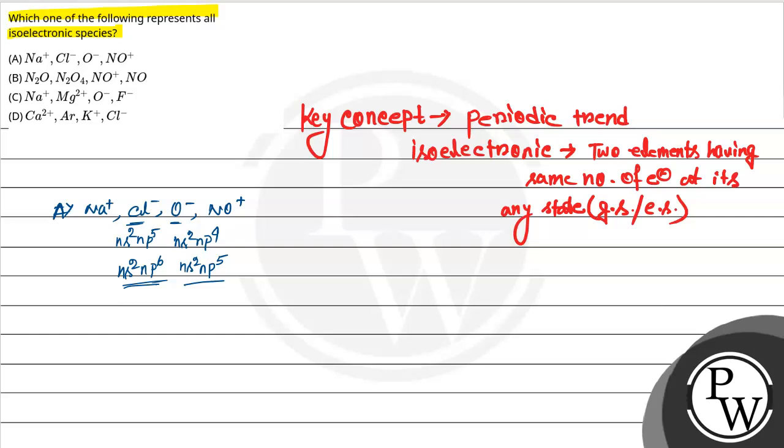So if one electron is added, then it is different. Chlorine and oxygen is not isoelectronic. Option B.